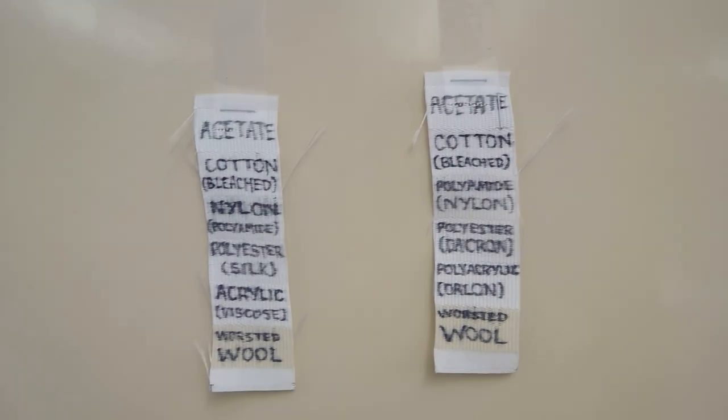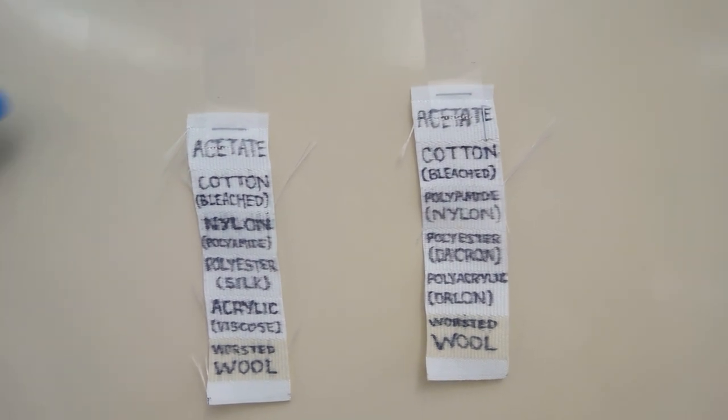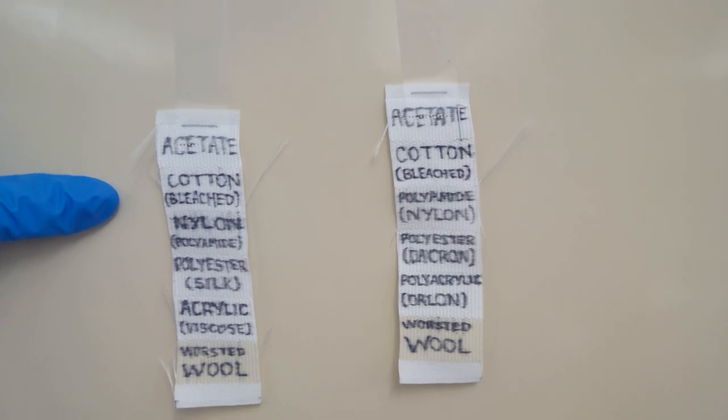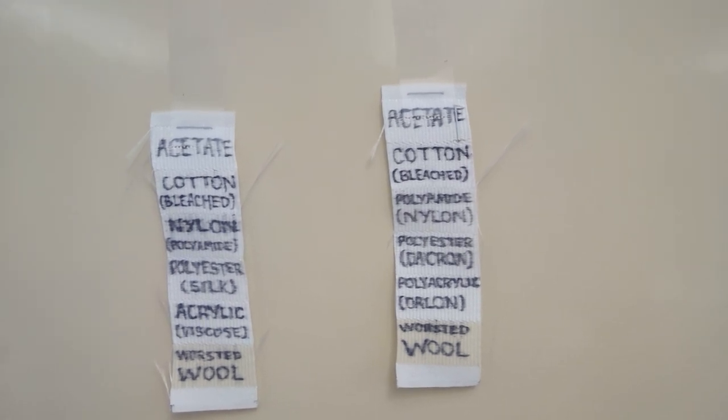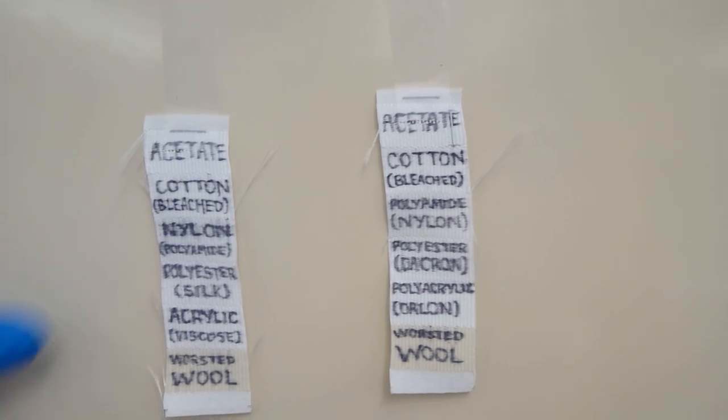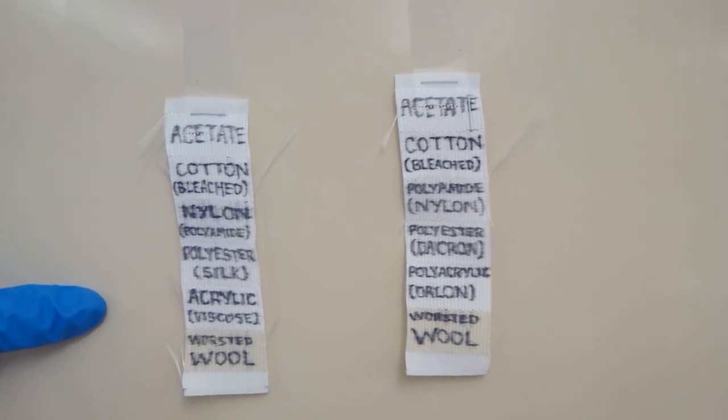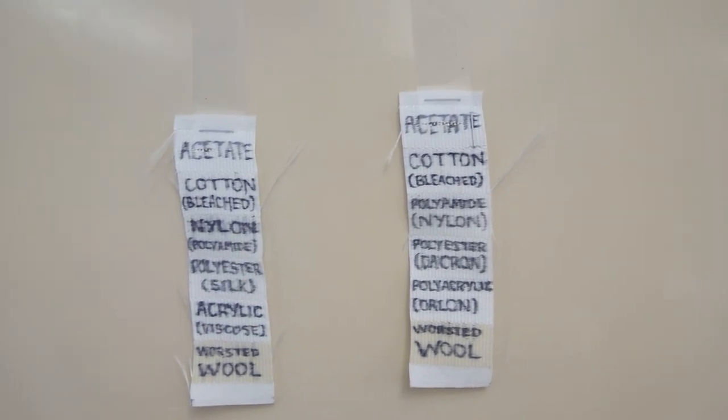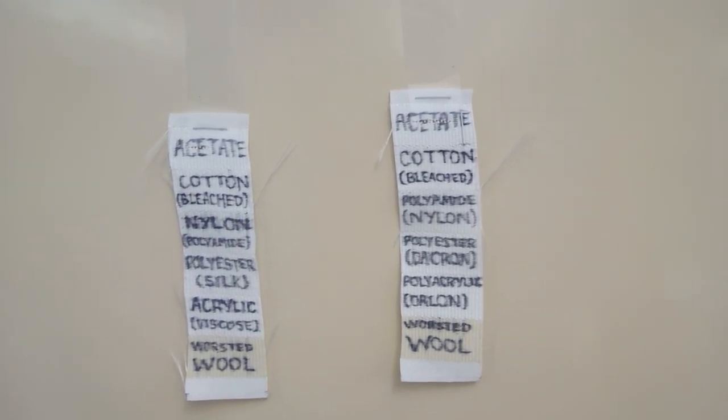On this multi-fiber fabric strip we have acetate, which is a synthetic fiber. We've got cotton, which is a naturally occurring fiber. Nylon is synthetic, as well as polyester. Acrylic is another synthetic fiber, and then we have worsted wool, which is a treated type of natural wool.